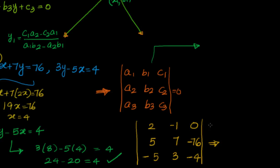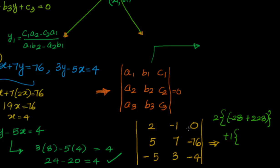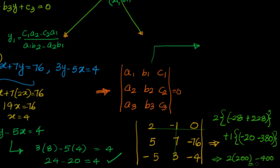Expanding along the first row, starting with 2: we get 2·[(7·(−4)) − (3·(−76))] = 2·[−28 + 228] = 2·200. Then for the second element, −(−1)·[(5·(−4)) − (−5·(−76))] and the third term with 0. This simplifies to 2·200 − 400 = 0. The determinant equals zero.